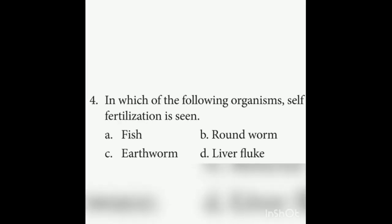Fourth question: In which organism is self-fertilization seen? Self-fertilization occurs in hermaphroditic animals where both sexes are present in the same animal. The answer is liver fluke, also called Fasciola hepatica.